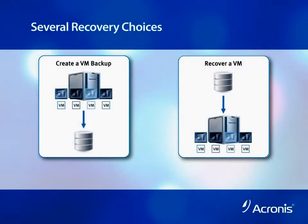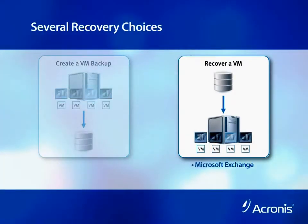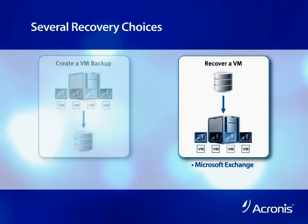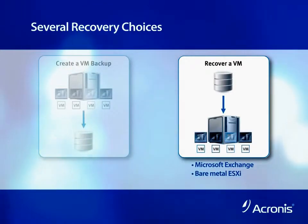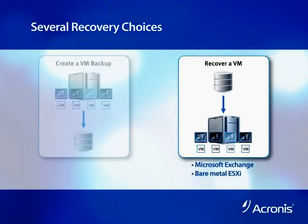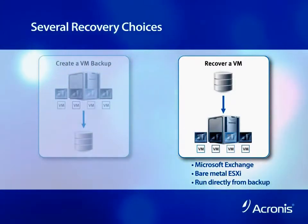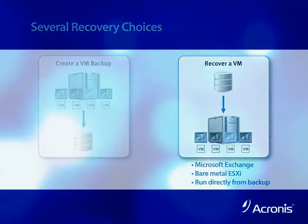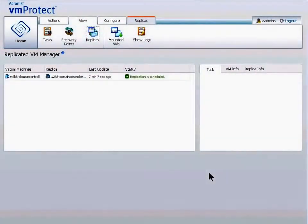VM Protect offers many recovery options, including Microsoft Exchange individual files, folders, or mailbox, an entire virtual machine, or an Exchange database or server. Bare Metal ESXi configurations using ESXi backup is built in. You can also remove recovery altogether by running VMs directly from your backup files or by using VM replication, which is the recovery type we'll demonstrate today. This can be done directly from the VM Protect web-based console.